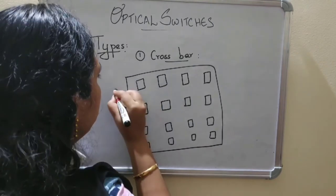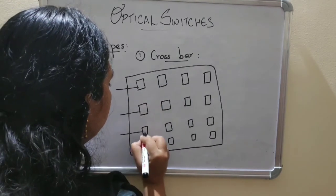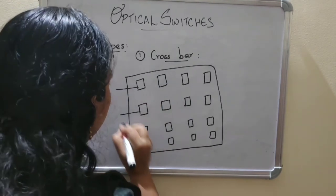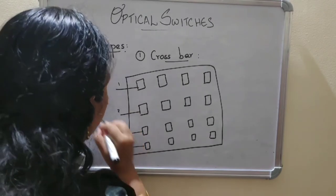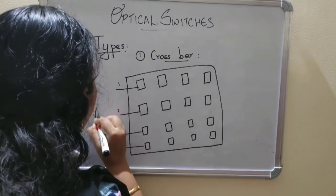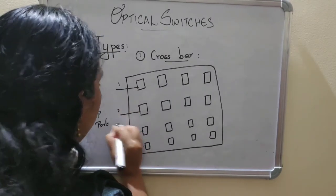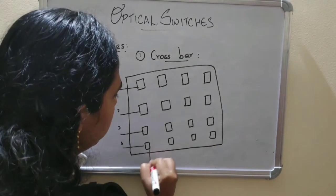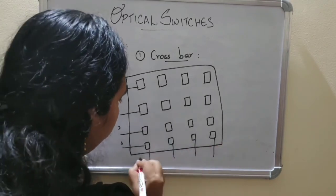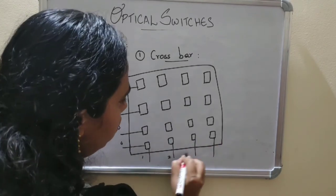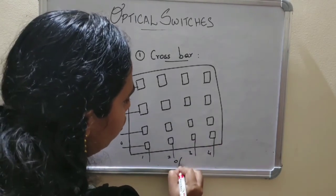These are the inputs: 1, 2, 3, 4 — this is the Input Board. And here, these all are outputs: 1, 2, 3, 4 — that is the Output Board.